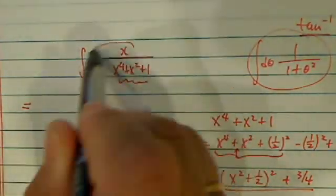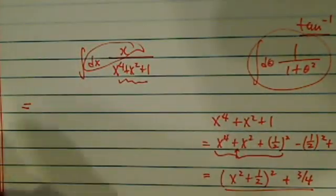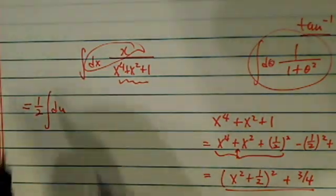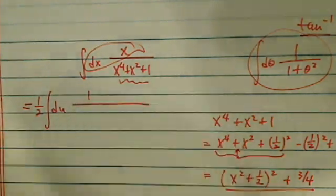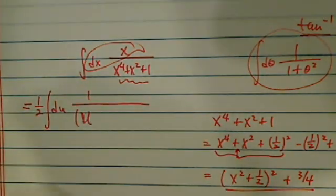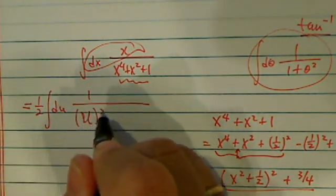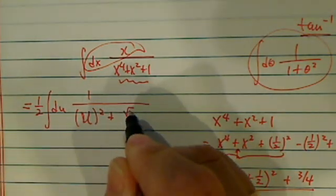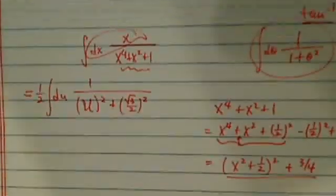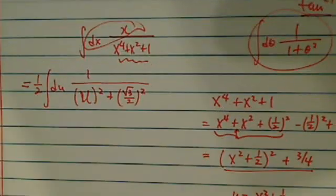x dx, let's circle that part, that's equal to half of du. I'll put a du back in there. And then on the bottom I have 1 over u squared plus I'm going to squeeze this one into a square form as well, because I can use the formula for that arc tangent.